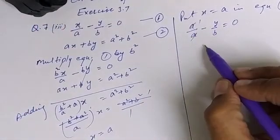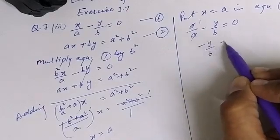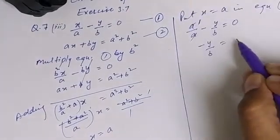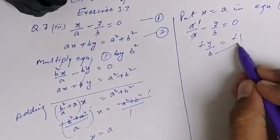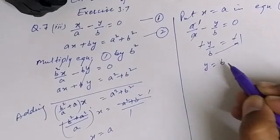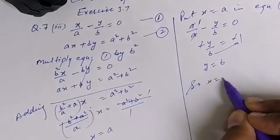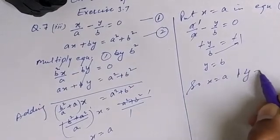So it is cancelled, 1 is left. So minus y over b is equal to, this 1 will become here minus 1. So minus minus will be cancelled on both sides. So cross multiply, y is equal to b. Hence x is equal to a and y is equal to b answer.